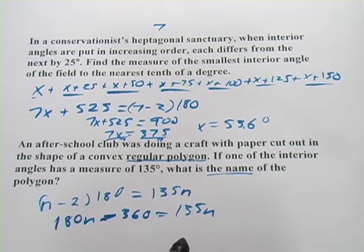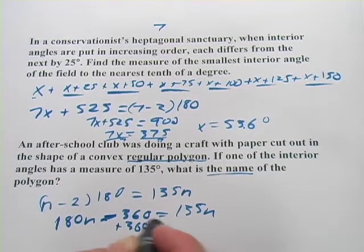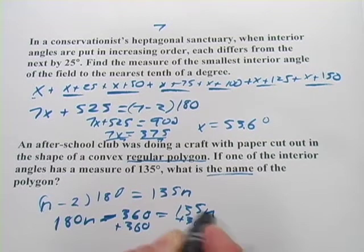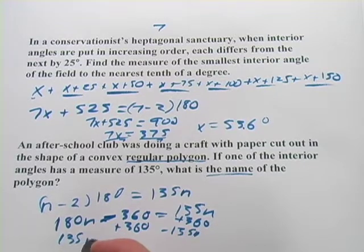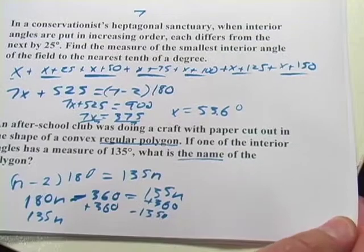I would add 360 and then I would subtract 135n. And we'd end up, let me move over here a little bit.